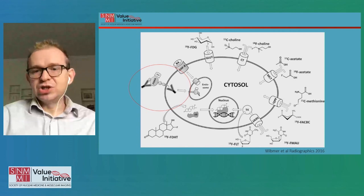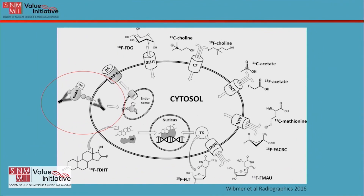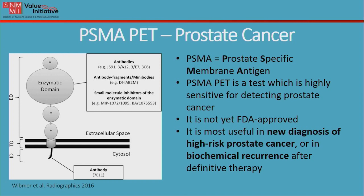There's a wide variety of different next-generation PET imaging agents. This educational video for patients will focus on PSMA — prostate-specific membrane antigen — shown on the left-hand side of the screen. PSMA is a test that's highly sensitive for detecting prostate cancer. It is not yet approved by the FDA as of the time of this recording, but we hope to see FDA approval of some of these agents in 2021, making them more widely available. PSMA is a protein expressed on the surface of prostate cancer cells, with low expression in other background tissues, allowing us to very specifically detect sites of prostate cancer recurrence.